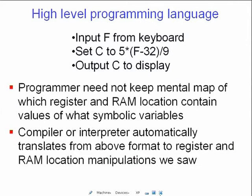This is painful. Ideally we would like to say: input F from keyboard, set C to 5 times (F minus 32) over 9, and output C to display. The programmer need not keep a mental map of which register and which RAM location contain the symbolic variables. Something like a compiler or interpreter should automatically translate that high-level code into the manipulations involving registers and RAM that we saw before. In this class we won't look into how the compiler turns high-level code into low-level code — that's the job of computer scientists. We will see how to write efficient and beautiful code in high-level programming languages to do specific tasks.